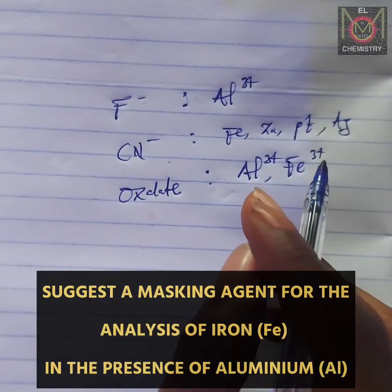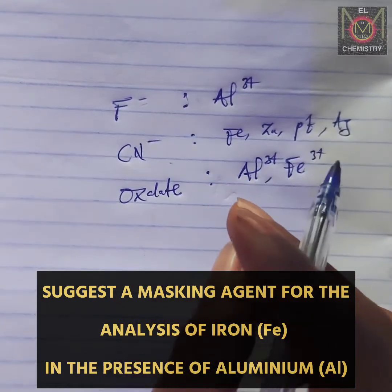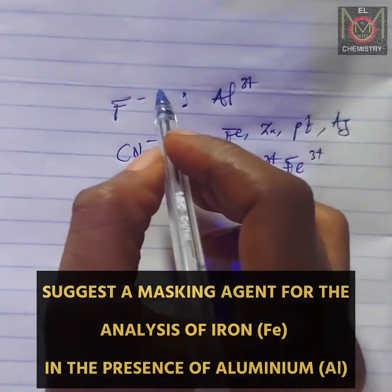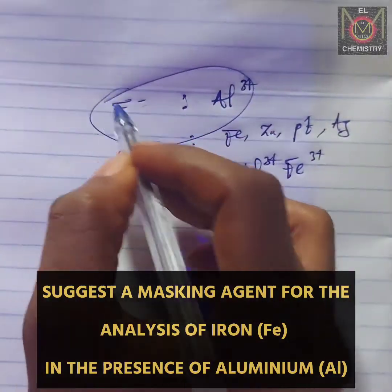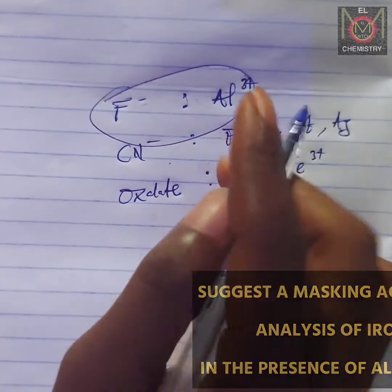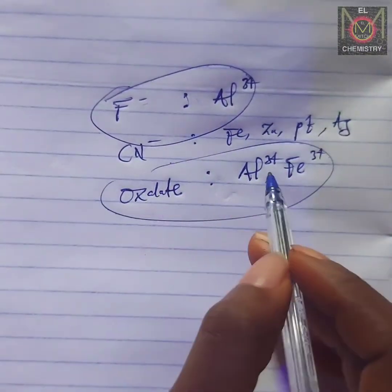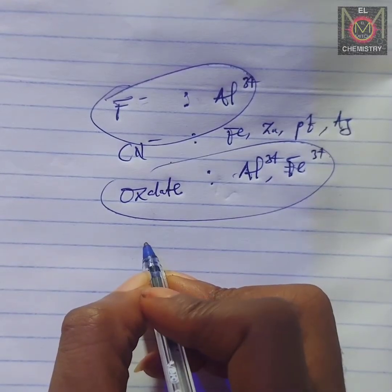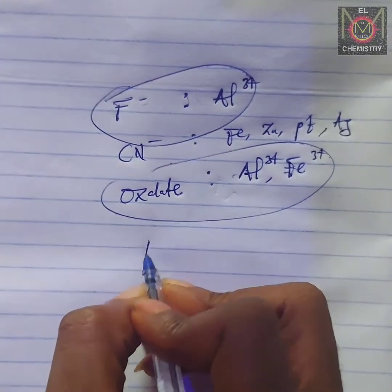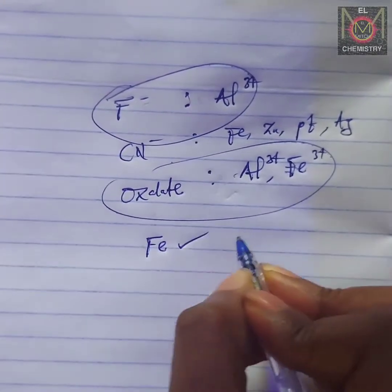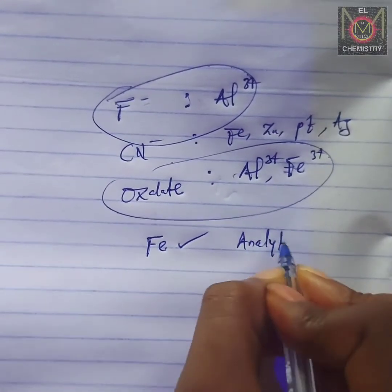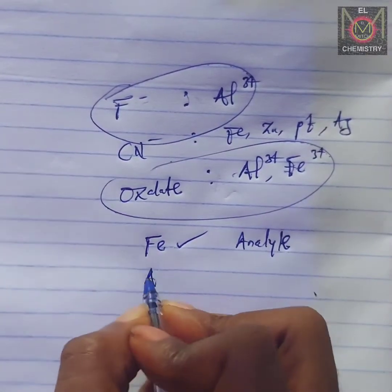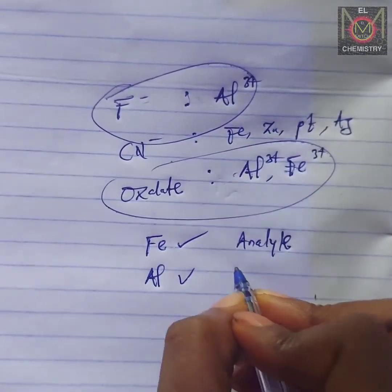Now back to the question: suggest a masking agent for the analysis of iron in the presence of aluminum. We can see that fluoride is specifically used for masking aluminum, while oxalate is used for masking both. But in this case, we want to analyze iron—this is our analyte.